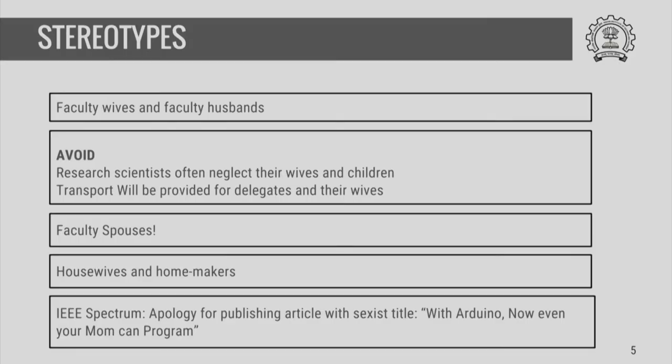This is in fact reflected in a controversy that took place in a journal called the IEEE Spectrum, where somebody wrote an article about a microprocessor titled 'With Arduino, Now Even Your Mom Can Program.' This title appeared to be sexist and caused offence to many mothers, because it assumes that mothers are basically people without many skills. In an age where women are professionally as advanced and equal as men, such kinds of terminologies are to be avoided so that they do not appear sexist and do not offend people who have accomplished so much in their lives despite several constraints.